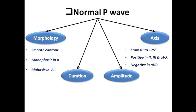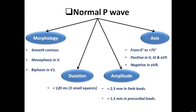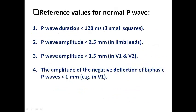Regarding axis, the normal P wave originates from the SA node, which lies in the right upper quadrant of the heart, so the axis is directed towards the left lower quadrant — between 0 and +75 degrees. P wave would be positive in leads 2, 3, and AVF, and negative in AVR. Regarding duration, it is shorter than 120 ms — less than 3 small squares. Regarding amplitude, it is less than 2.5 mm in limb leads and less than 1.5 mm in precordial leads, and the negative deflection of the biphasic P wave should be less than 1 mm in V1.